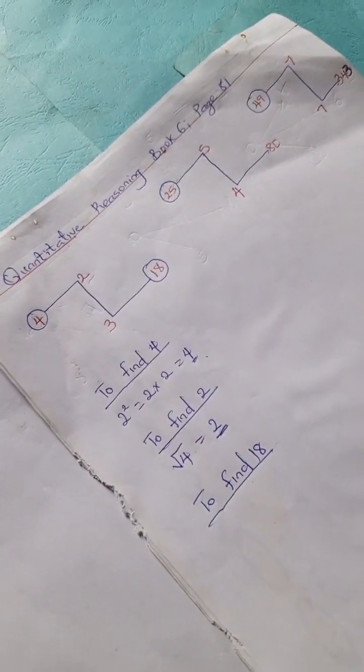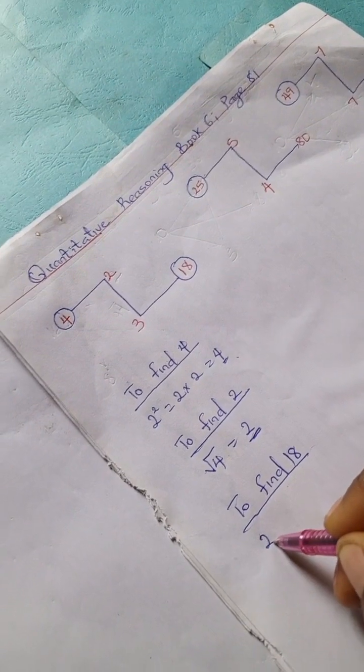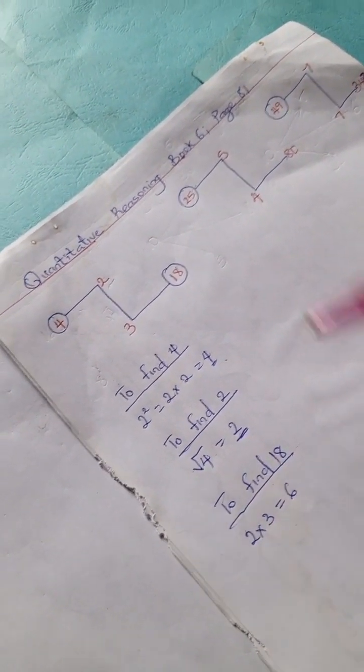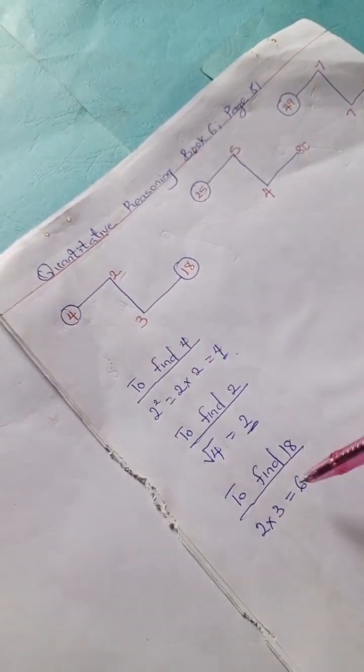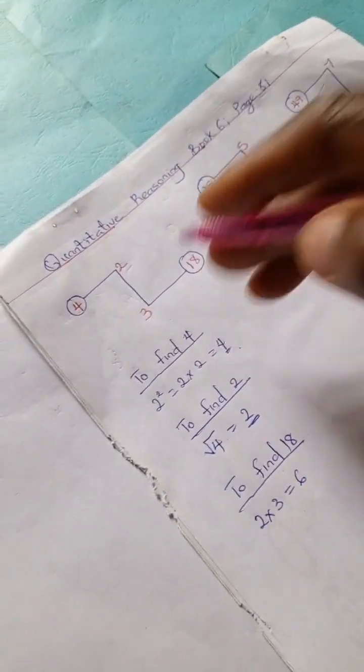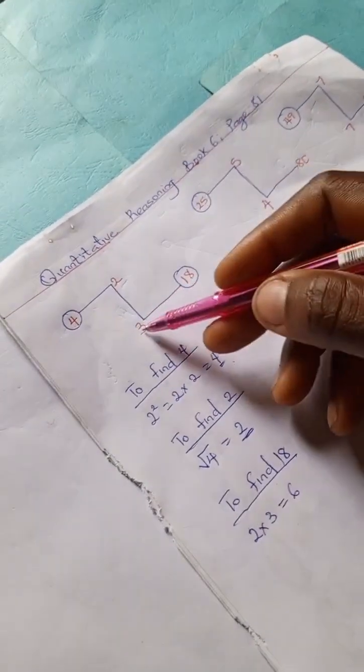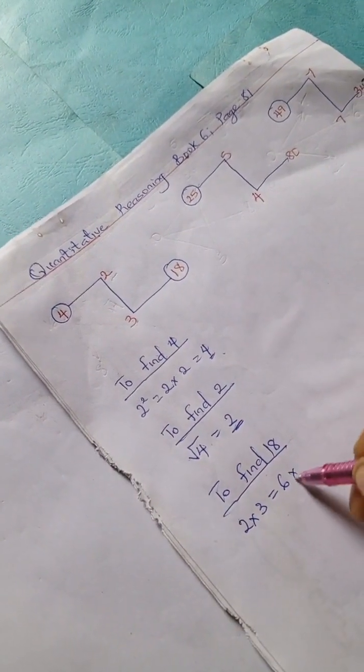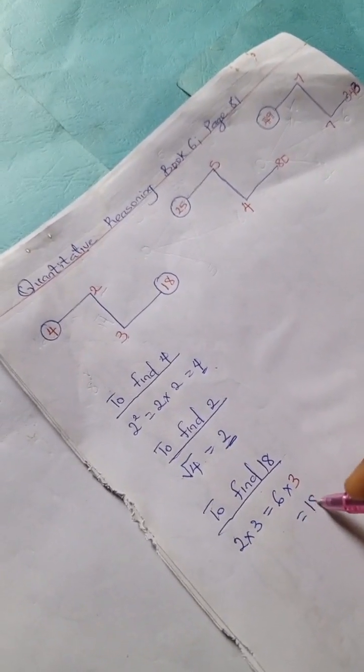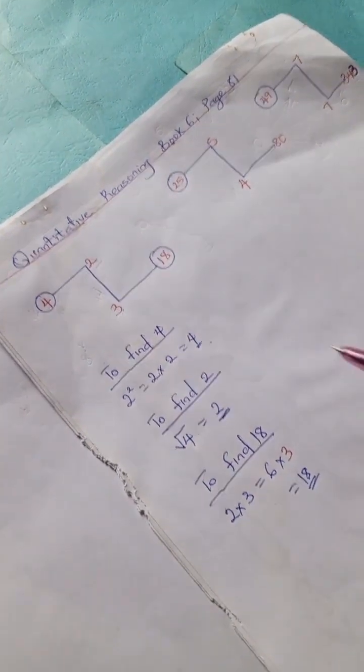To find 18, we're going to have 2 times 3 is 6. Now, the 6 you have gotten, multiply by this same 3. Whatever number is here, you multiply again. So we're going to have 6 times this 3, which gives us 18.